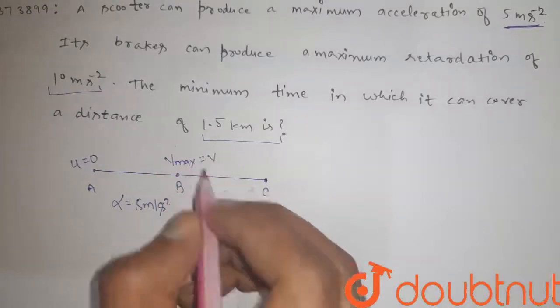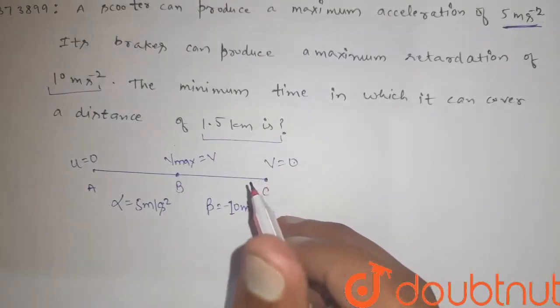That is V, and finally the velocity becomes 0. So if V is the maximum velocity attained, then during acceleration between A and B, we apply the equation V square minus U square is equal to 2AS.